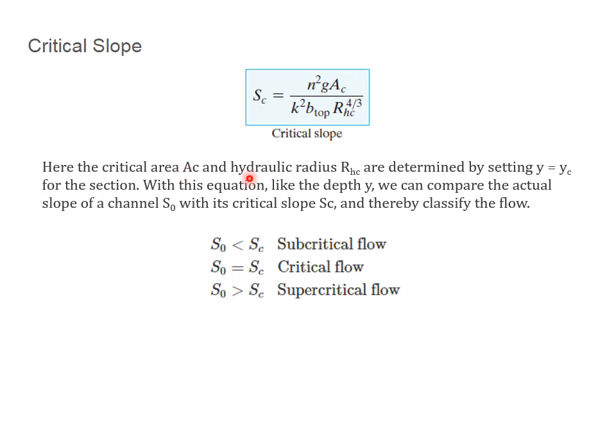Here, the critical area AC and hydraulic radius RHC are determined by setting Y equals YC for that section. With this equation, like the depth Y, we can compare the actual slope of the channel S0 with its critical slope SC, and therefore classify the flow. If S0 is less than SC, it's subcritical flow. If they're equal, it's critical flow. And if S0 is greater than SC, it's called supercritical flow. We'll see this in some of the examples we'll look at later on.